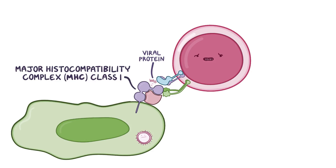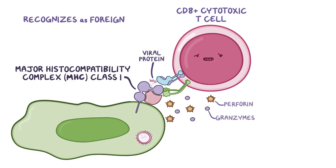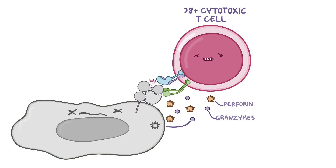Specifically, a type of T lymphocyte called a CD8 positive T cell, or a cytotoxic T cell, will bind to the antigen presented by the MHC class 1 proteins. If the cytotoxic T cell binds strongly, then the antigen is recognized as foreign, and the cytotoxic T cell secretes inflammatory molecules and enzymes, like perforin and granzymes. Perforin is able to form holes in the infected cell, and that allows granzymes to enter it. Once inside, the granzymes induce apoptosis, or programmed cell death, which destroys the cell.